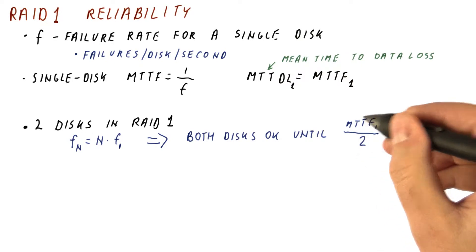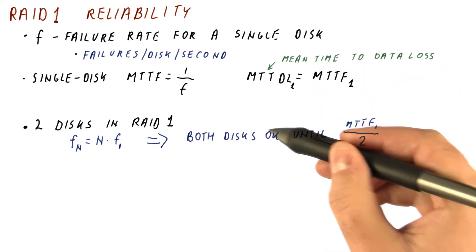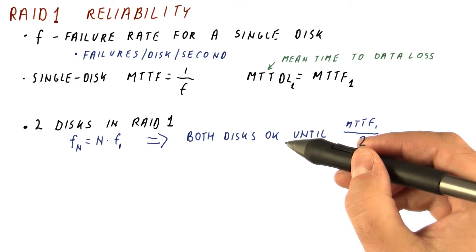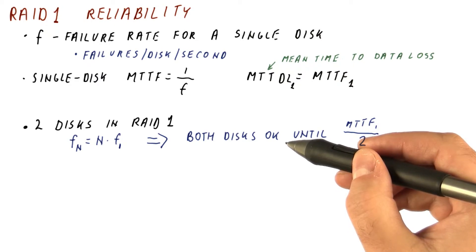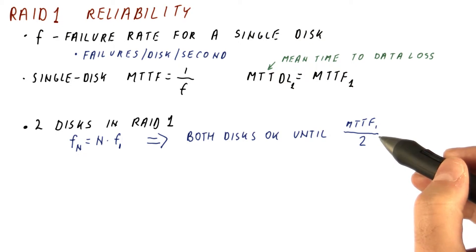Now, unlike RAID 0, where this is the point where we would lose data, now we have mirroring. So both of the disks need to fail in order for the whole thing to lose data. One failure is not data loss yet. So we don't have the failure of the array yet.